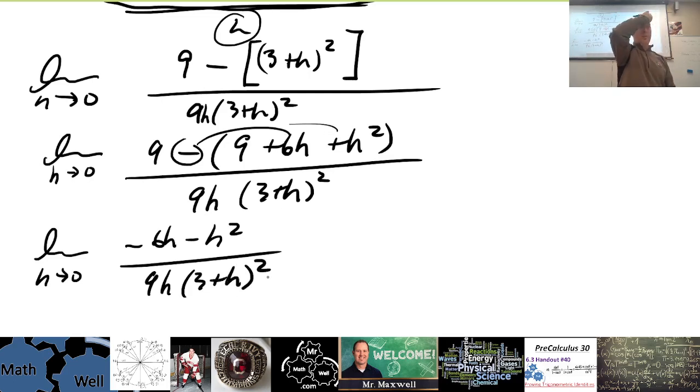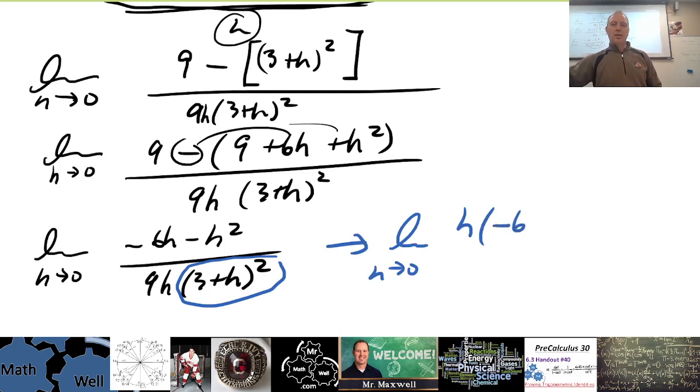I have negative 6h minus h squared when I distribute that. Now, notice I'm not expanding the bottom. I don't need to. You don't need to expand the bottom, because notice that this whole thing, like this 3 plus h all squared, that's like two factors of 3 plus h, and this is not providing a problem at all. If I substitute h, if h goes to 0, this whole thing becomes 3 plus 0 squared. So I don't have to worry about it. I don't have to expand it or get rid of it. I can just leave it there. What I do want to notice, though, is I want to factor an h out.